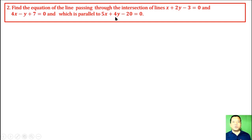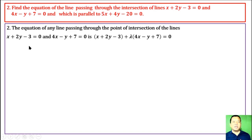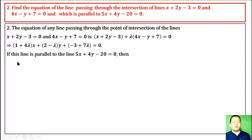Question 2. Find the equation of the line passing through the intersection of two given lines and which is parallel to a third given line. The equation of any line passing through the point of intersection of the first two lines is: first line + λ times second line = 0. If this line is parallel to the third line, then the coefficients of x and y are compared, giving us the ratio condition.